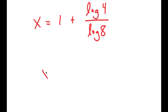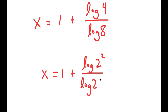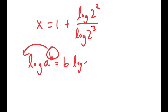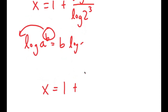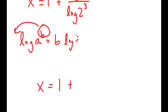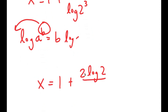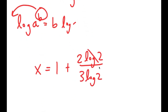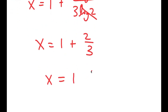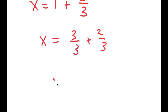Now, log of 4 is the same thing as log of 2 squared, and log of 8 is the same thing as log of 2 to the power of 3. Since I have something in the form log of a to the power of b, I can move b to the front. So I get x is equal to 1 plus 2 times log 2 over 3 times log 2. These two cancel out, and I get x is equal to 1 plus 2 over 3, which is equal to 3 over 3 plus 2 over 3, which is 5 over 3.